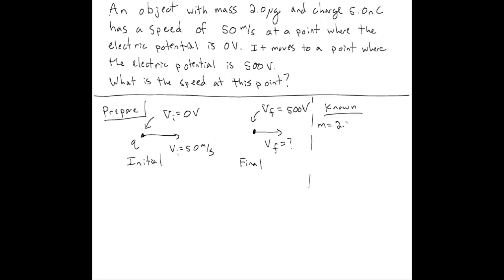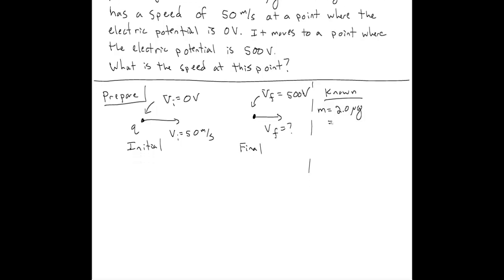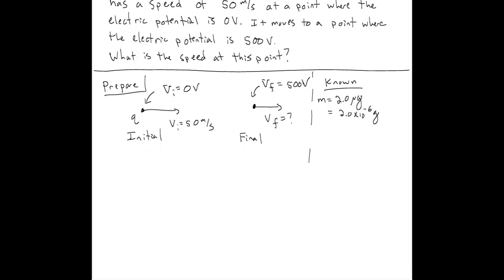The mass is 2.0 micrograms. You should be careful because 2 micrograms is 2 times 10 to the minus 6 grams, but you want things in kilograms. Converting this into kilograms gives 2 times 10 to the negative 9 kilograms.